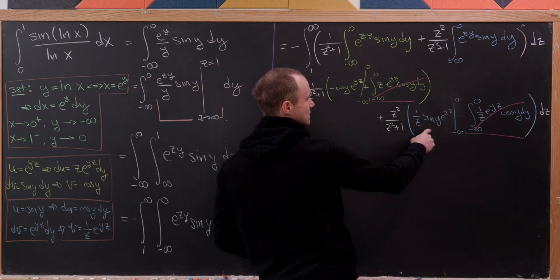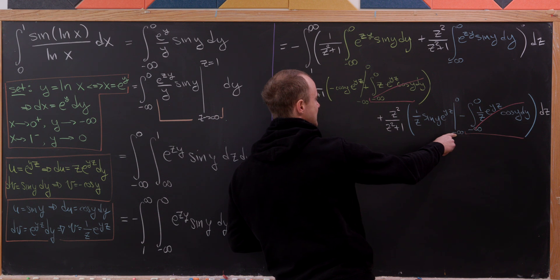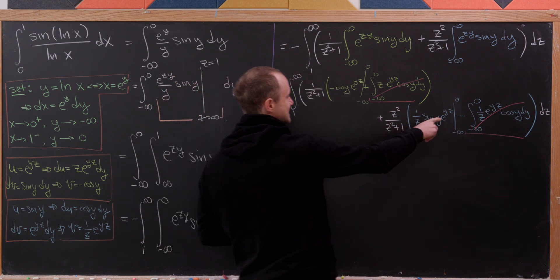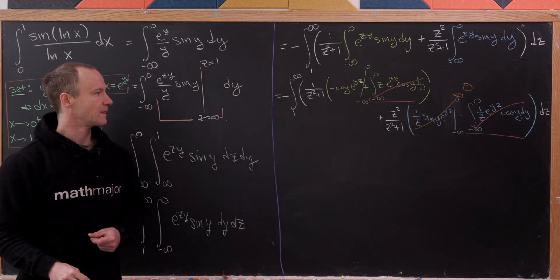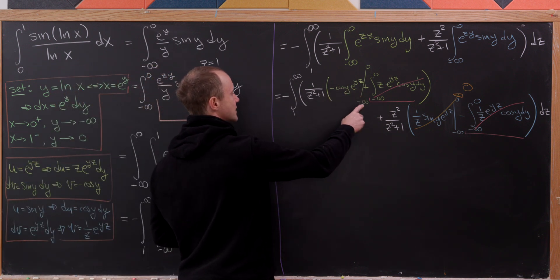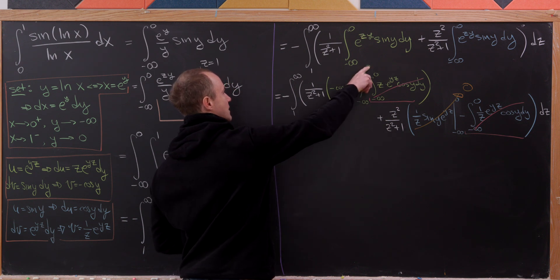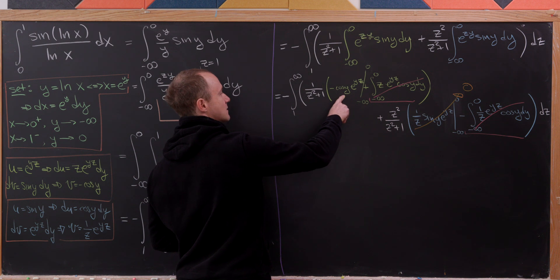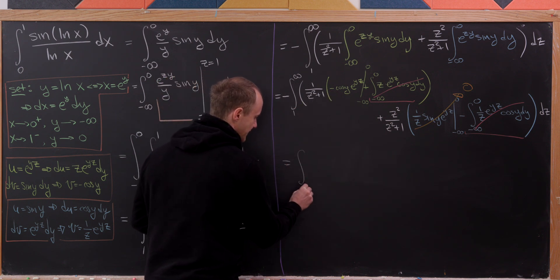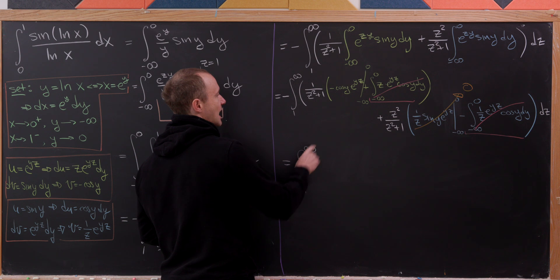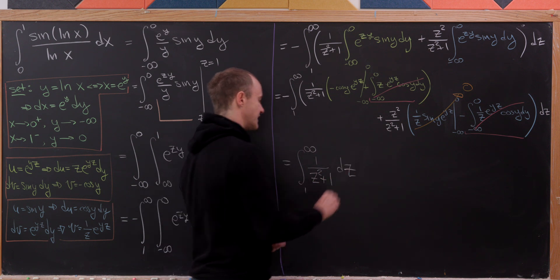Evaluating the boundary terms: at y equals 0, sine of 0 is 0 so those terms vanish; as y approaches minus infinity with positive z, the exponential approaches 0. At y equals 0, cosine of 0 is 1 and e to the 0 is 1, and the two minus signs cancel, leaving the integral from 1 to infinity of 1 over z squared plus 1 dz.